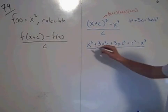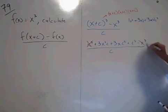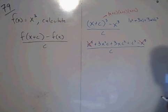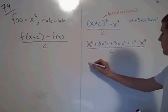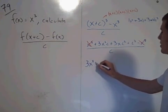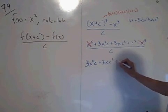So you'll see that this x cubed term and this negative x cubed term cancel out. And then what you're left with is 3x squared c plus 3x c squared plus c cubed, all over c.